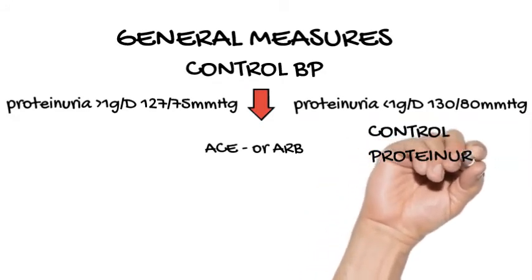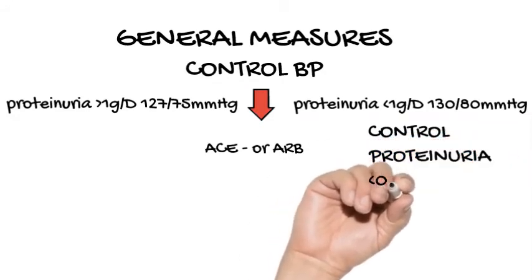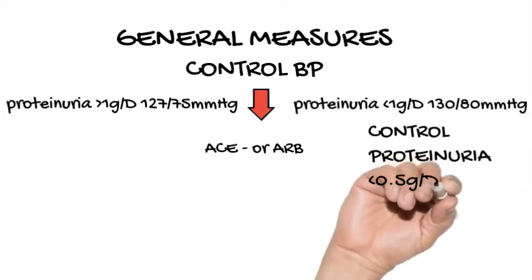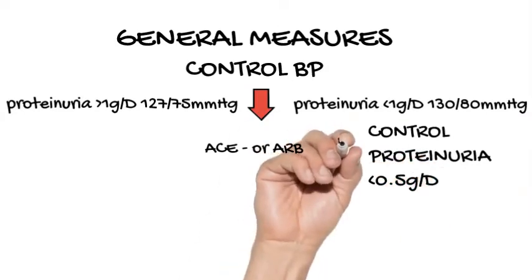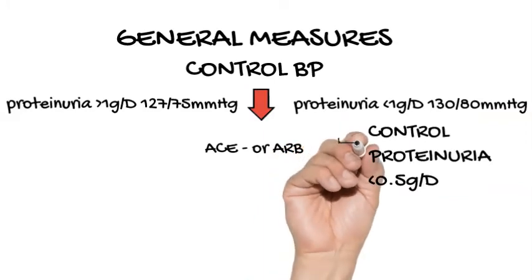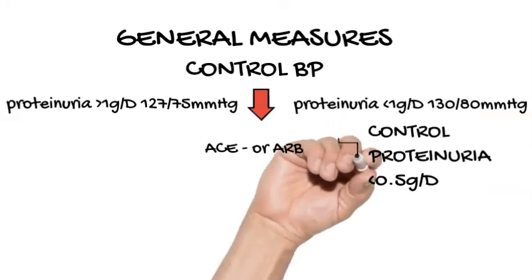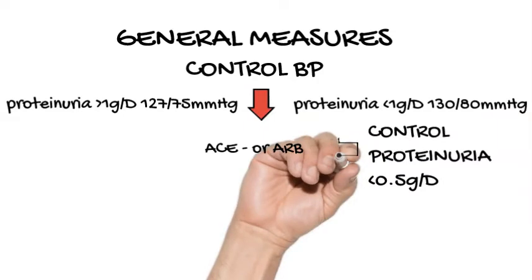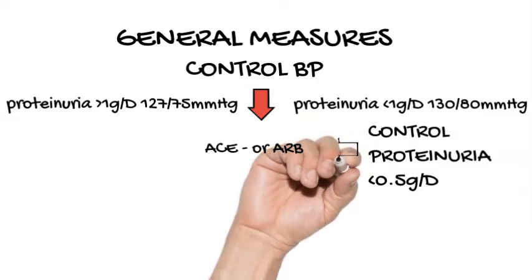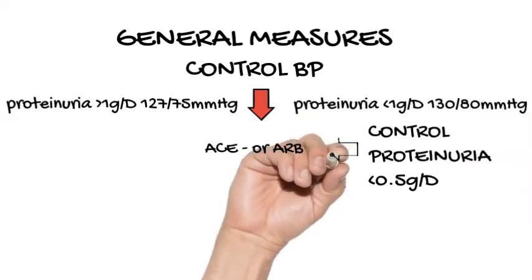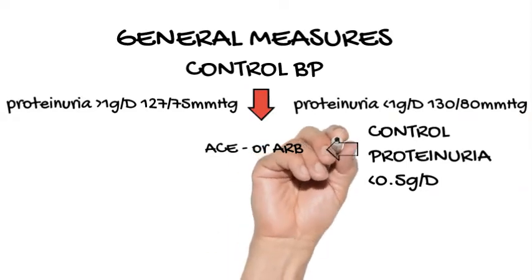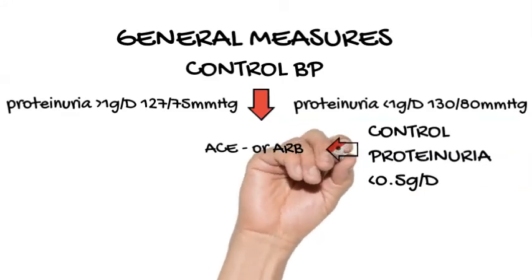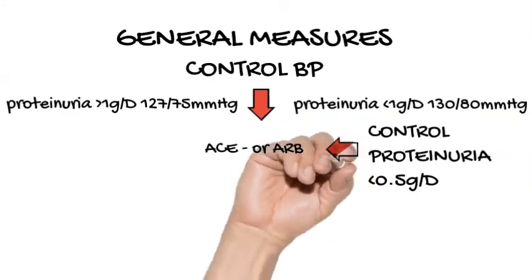Reducing proteinuria. Angiotensin-converting enzyme inhibitors should be used to reduce proteinuria and retard progression, in the absence of hypertension, in patients with glomerulonephritis. Angiotensin receptor blockers can be used as an alternative to ACE inhibitors. The target level of proteinuria with therapy has been recommended to be less than 0.5 grams per day so as to accrue maximal benefit in renal protection.